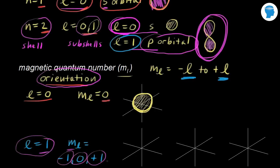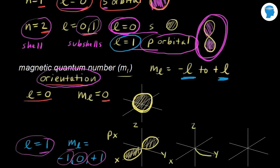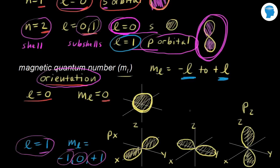Using x, y, and z axes, we can orient a dumbbell along the x-axis — that's the px orbital — along the y-axis, giving the py orbital, and along the z-axis, giving the pz orbital. So we have three p orbitals, one for each axis, corresponding to the three values of the magnetic quantum number.